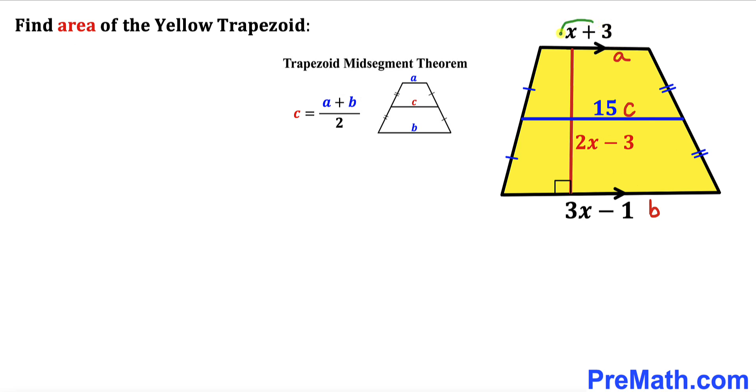If I label this base as an A, this base as a B and this mid segment as C where A equals to x plus 3, B equals to 3x minus 1 and C equals to 15. So let's go ahead and plug in these values in this formula.